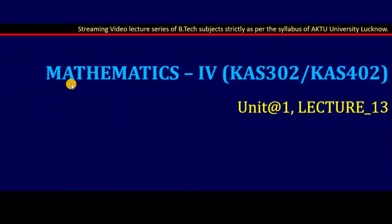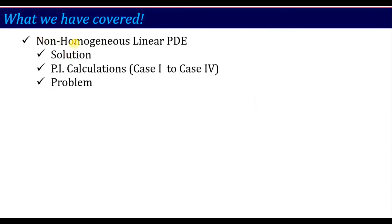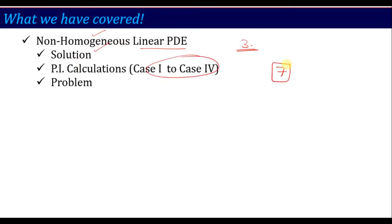Hello everyone, welcome to the video lecture series of Mathematics 4. The subject code is KAS302 or KAS402, and here we are in lecture number 13 of unit 1. In the last lecture, we finished the solution of non-homogeneous linear partial differential equations, covering PI calculation from case 1 to case 4, and before that we completed the homogeneous part. If you remember all those cases, you will be able to proceed with this lecture, as it builds heavily on previous lectures while introducing a new concept.